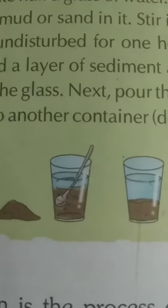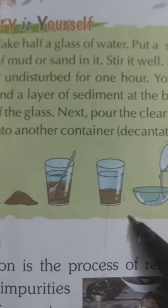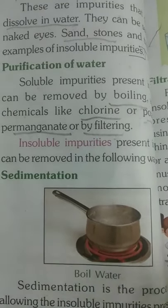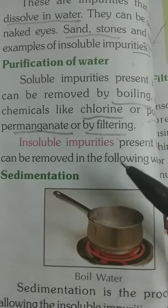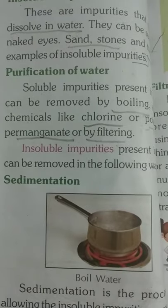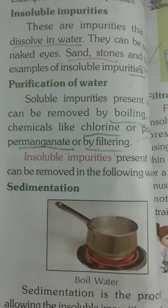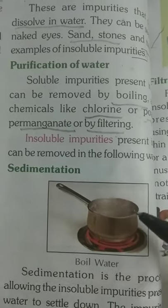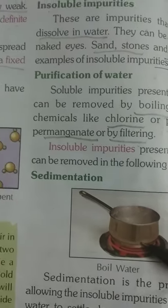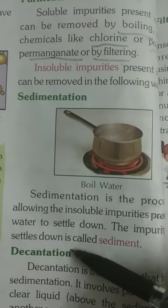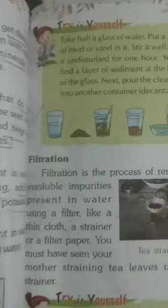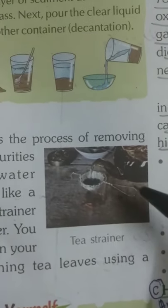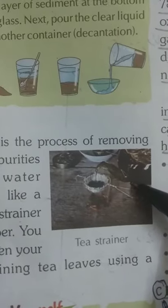Then we discussed soluble impurities and insoluble impurities in water, and how we can remove them using water purification methods. We can remove soluble impurities by boiling, by adding chlorine or potassium permanganate, or by filtration. Insoluble impurities can be removed by sedimentation, followed by decantation, then filtration.